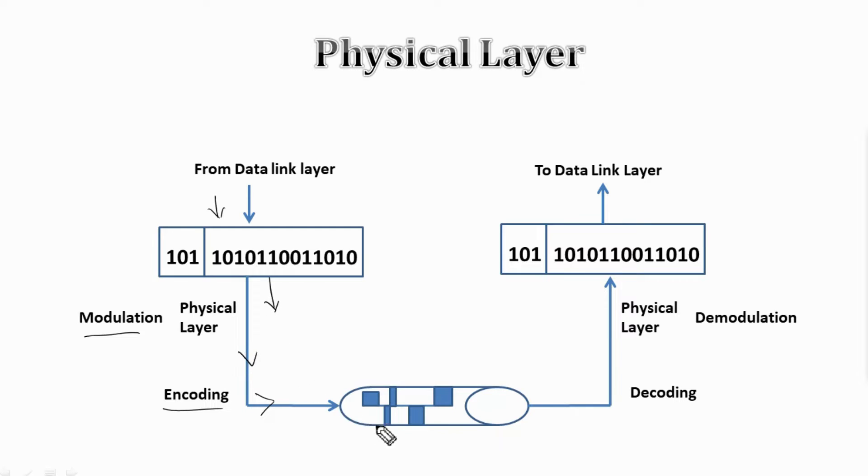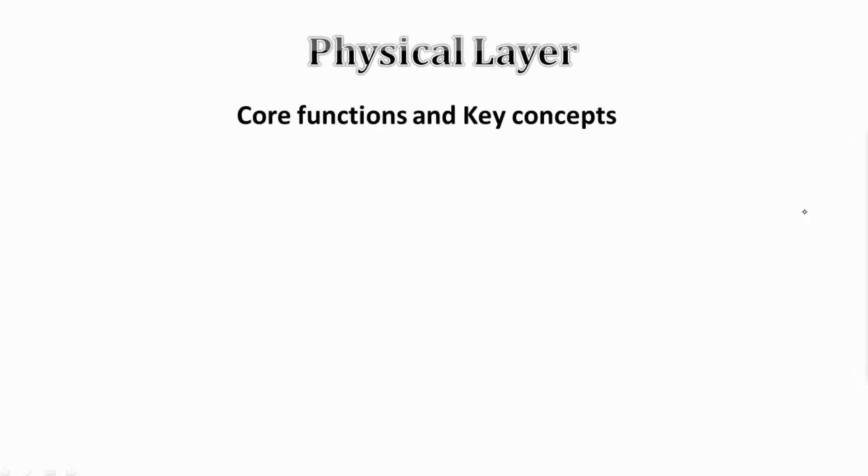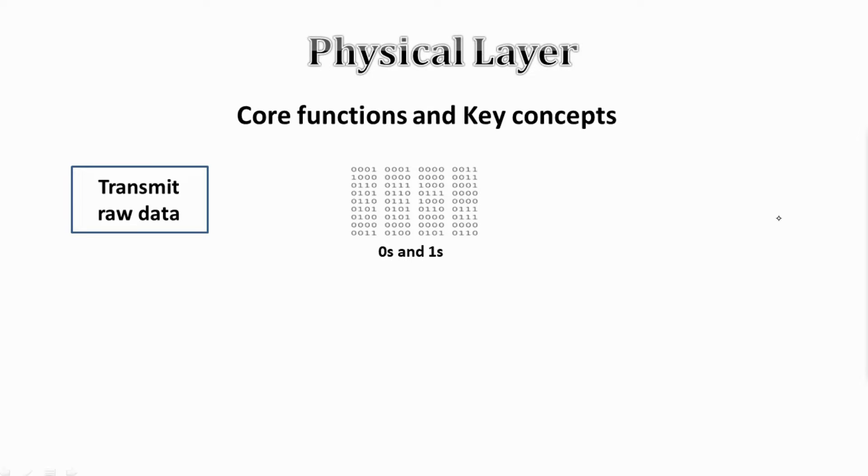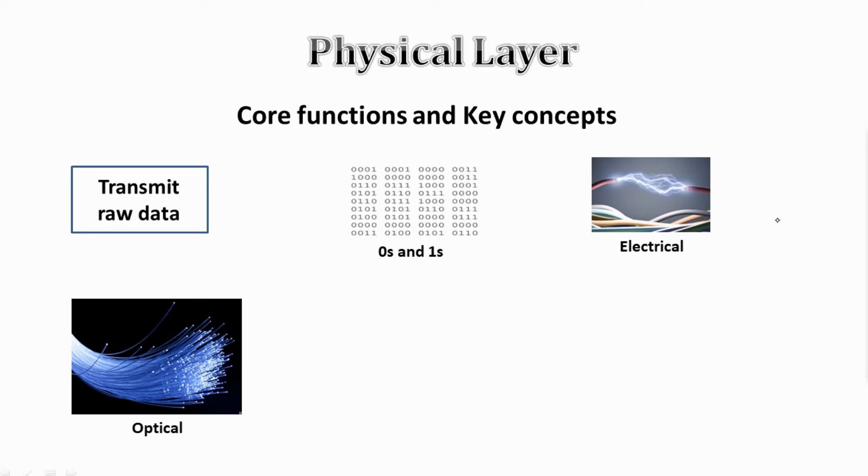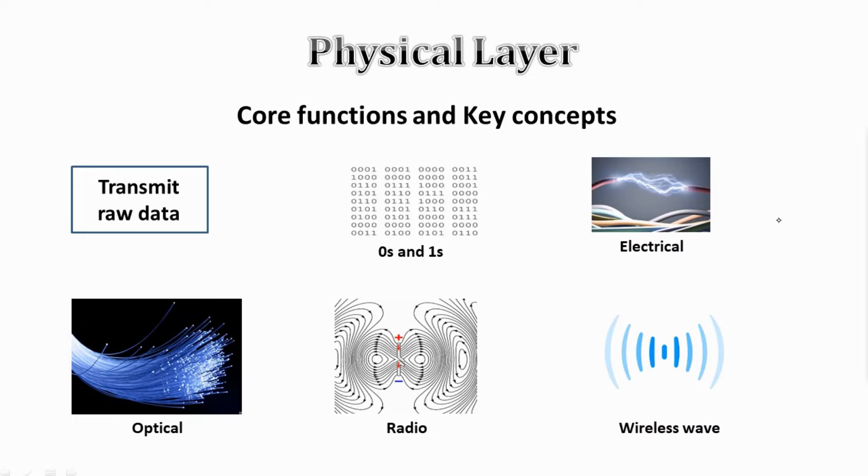Moving on, the physical layer handles the transmission of raw data. This layer handles the actual binary bits—zeros and ones—transferring them into electrical form, optical signals, and radio signals or wireless wave signals for transmission.